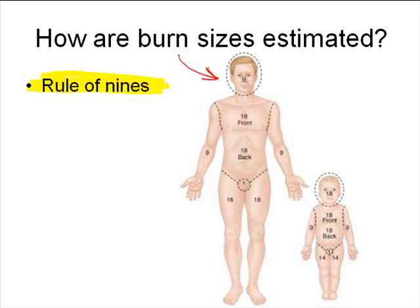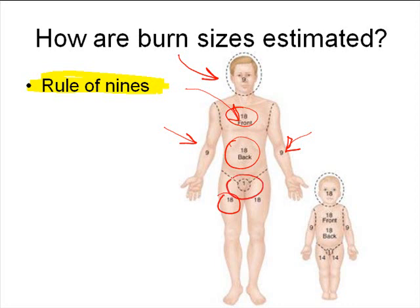In an adult, we divide out the body into quadrants of nine. For example, the front and back of one arm counts for 9% of the total surface area of the body, the front and back of the other arm accounts for another 9%. The front of the torso accounts for 18% — that's two times nine. The back of the torso accounts for another 18%. Each leg accounts for 18% of the surface area, so the front of one leg is 9%, the back of one leg is 9%, the front of the other leg is 9%, the back of the other leg is 9%. The inguinal region around the groin accounts for roughly 1%, and the head accounts for 9%. So you can see where we get the idea of the rule of nines — almost everything is some factor of nine.